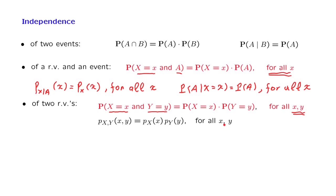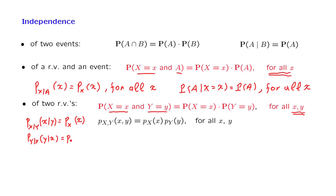What does independence mean? When I tell you the value of Y, no matter what value I tell you, your beliefs about X will not change, so that the conditional PMF of X given Y is going to be the same as the unconditional PMF of X. This has to be true for all values of the arguments of these PMFs. There is also a symmetric interpretation: the conditional PMF of Y given X is going to be the same as the unconditional PMF of Y. We have the symmetric interpretation because, as we can see from the definition, X and Y have symmetric roles.